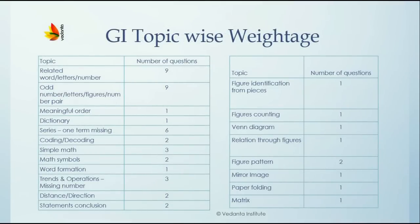Now let's analyze the General Intelligence topic according to weightage. To your left you can see a table representing the verbal reasoning section, and to your right is the table for the non-verbal reasoning section. It is clear that the majority of questions come from the verbal reasoning section, and within that, the majority come from the analogous section and series-type questions. You should note all relevant sections in decreasing order of number of questions and prepare in that order.